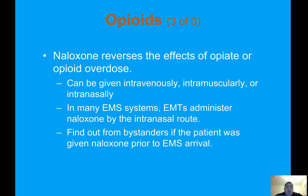Naloxone reverses the effects of opioid overdose and can be given intravenously, intramuscularly, or intranasally. Many EMS systems have EMTs administer naloxone by the intranasal route. Find out from bystanders whether naloxone was given prior to EMS arrival. For patients with respiratory distress or shallow, inadequate breathing, the dose of Narcan is 0.4 to 2 milligrams. If giving 2 mg intranasally, administer 1 mg in each nostril and push fast. Make sure the medication atomizes when you place the nasal atomizer on your syringe.